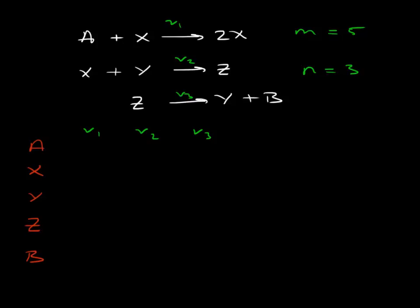Now let's put in the stoichiometric coefficients. So A is consumed one molecule at a time. So that has a stoichiometric coefficient of minus 1. X minus 1 here. Y minus 1 here. Z also minus 1 there. Z here is plus 1. Y here is plus 1. B is plus 1. The first reaction is slightly different. We have X on both sides of the equation. So here we just subtract the stoichiometric amount of the product from the stoichiometric amount of the reactant. And that gives us 1. So that's plus 1.